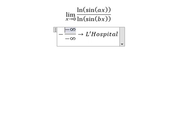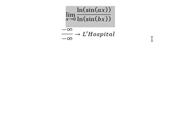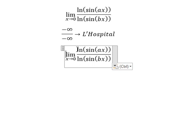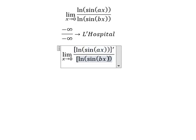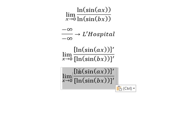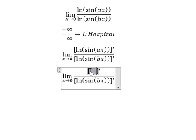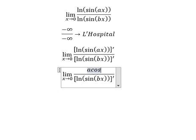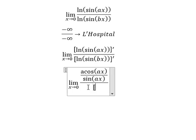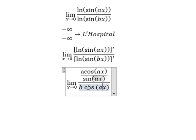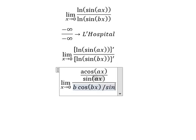That means we need to first differentiate the numerator and denominator. The derivative of the numerator gives us a·cosine(as) over sine(as), and for the denominator we have b·cosine(bs) over sine(bs).